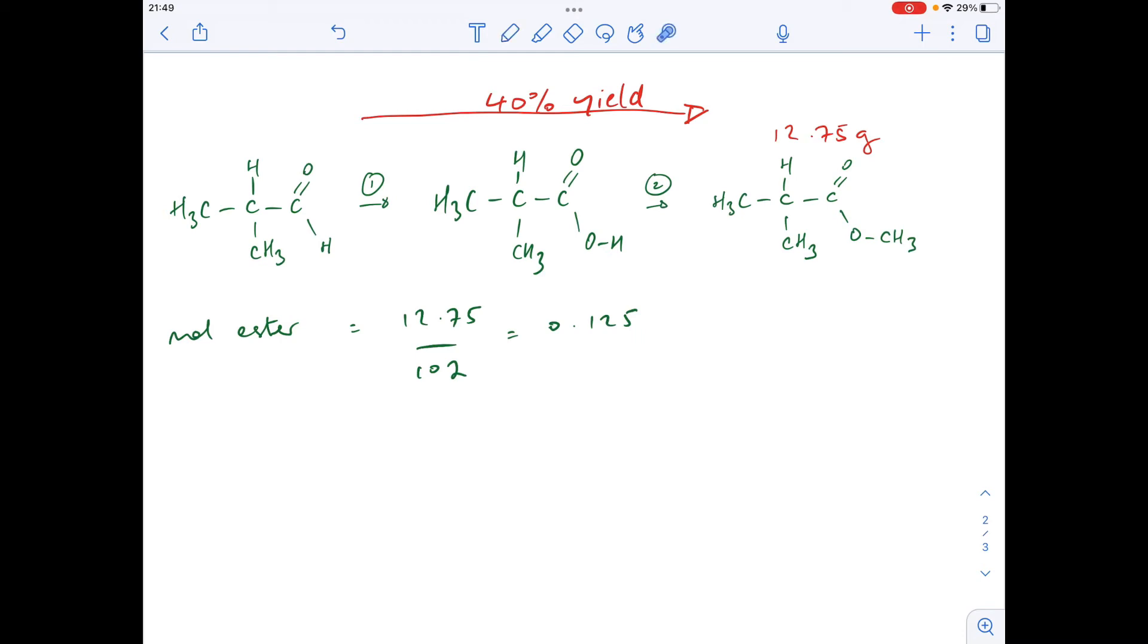Now if it was 100% yield, you can see there's a one-to-one ratio between the starting material and the ester. So if it was 100% yield, we would need 0.125 moles of the aldehyde, but it's only a 40% yield.